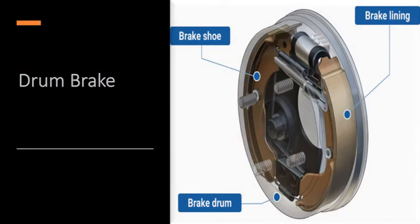Number 2: Drum Brakes. Drum brakes consist of a brake drum attached to the inside of the wheel. When the brake pedal is pressed, hydraulic pressure presses two brake shoes against the brake drum. This creates friction and causes the vehicle to slow and stop.